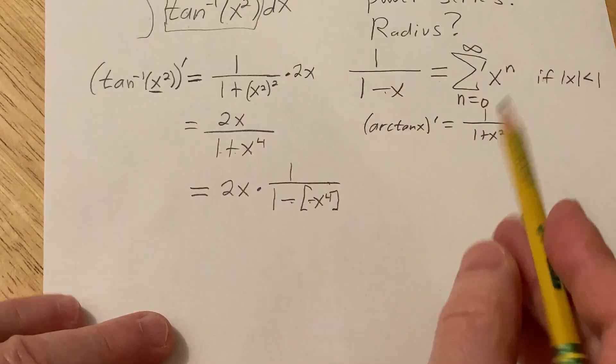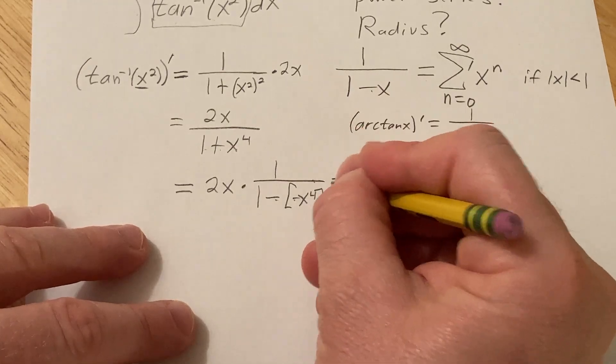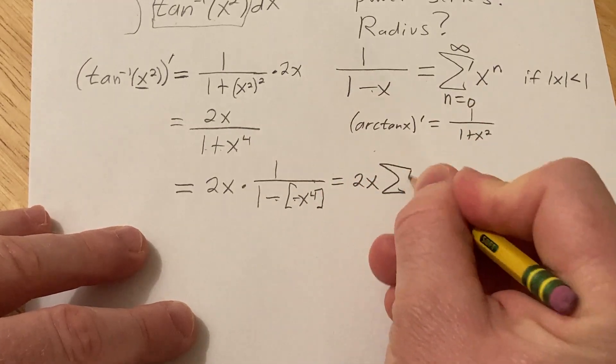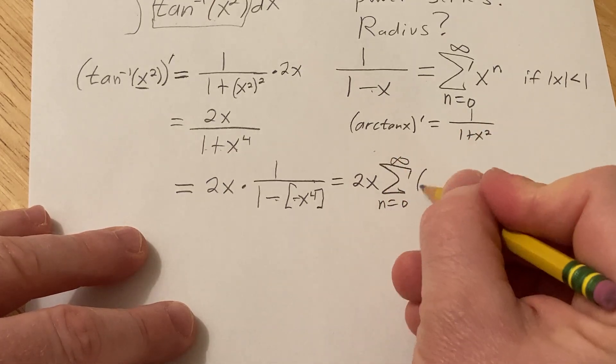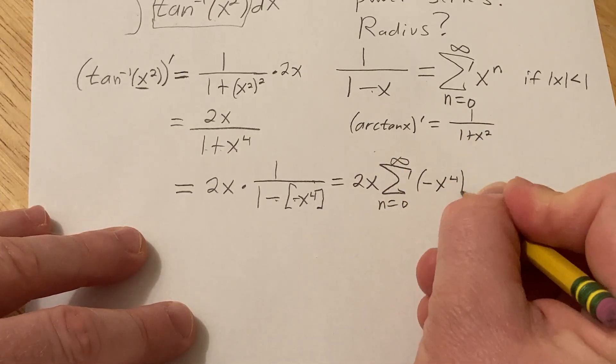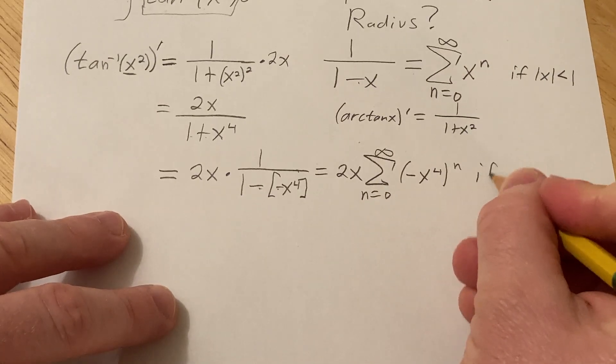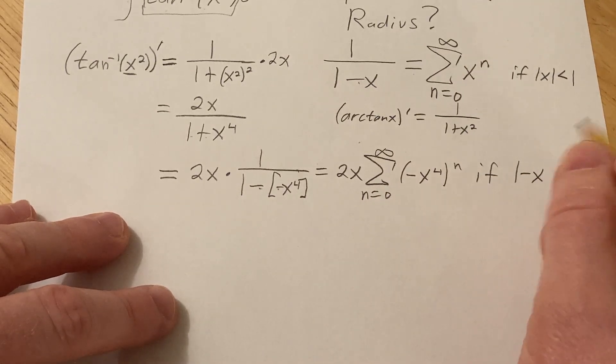Now we can apply this beautiful formula so we get 2x times the infinite sum as n runs from 0 to infinity of minus x to the fourth to the n power. This is valid if the absolute value of minus x to the fourth is less than 1, which basically means x to the fourth is less than 1.